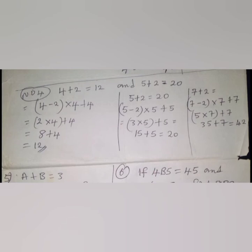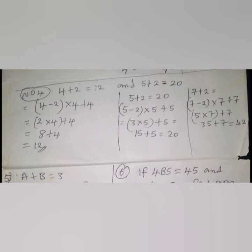Let's solve number four. For 4 + 2 = 12: take the first number minus the second number, in brackets, times the first number, plus the first number again. So (4 − 2) × 4 + 4 = 2 × 4 + 4 = 8 + 4 = 12. For 5 + 2 = 20: the second number is 2. So (5 − 2) × 5 + 5 = 3 × 5 + 5 = 15 + 5 = 20.